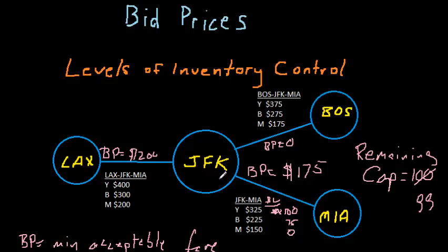The way O&D control works with bid prices is the same concept as leg level. We compared the fare with the bid price. Now if we want to evaluate a request from LAX to Miami through JFK, that request will take two units of the resource out of the network, so we add the two bid prices together. The opportunity cost to the network from selling this itinerary is the opportunity cost for giving up both seats.